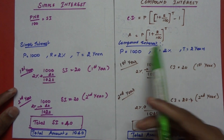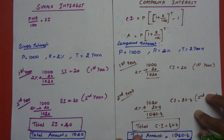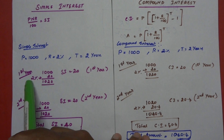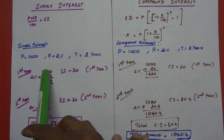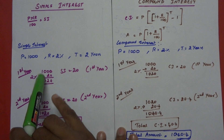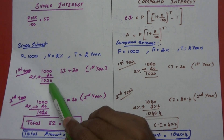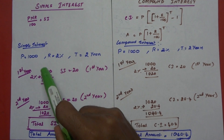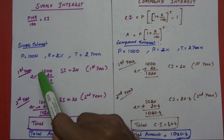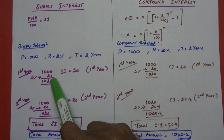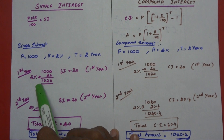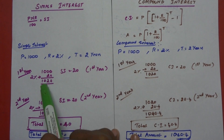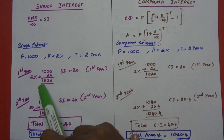Now, if you look at the first year, you calculate the interest in the first year. If you look at the interest in the first year, you have to calculate it. So the amount is 1,020.